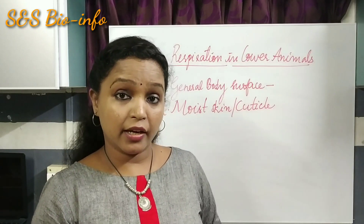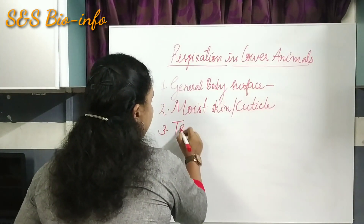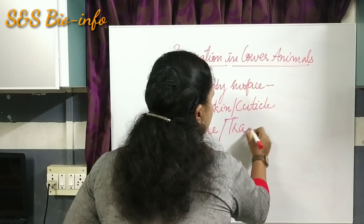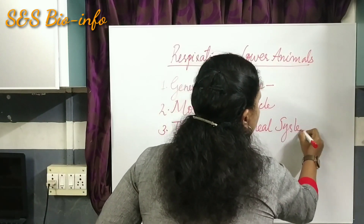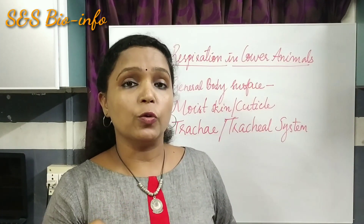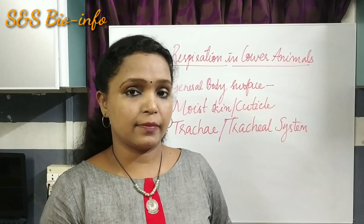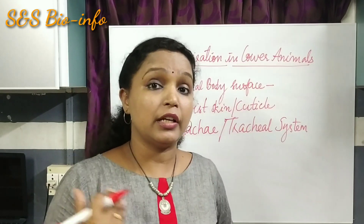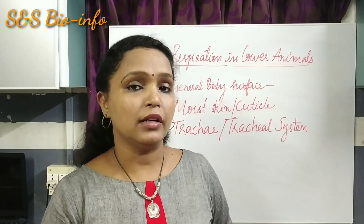The third one is trachea or tracheal system. Trachea are the network of tubes that help in gaseous exchange in most of the insects. Oxygen is diffused into the body through the spiracles to the network of tubes — the trachea or tracheal system — in insects.